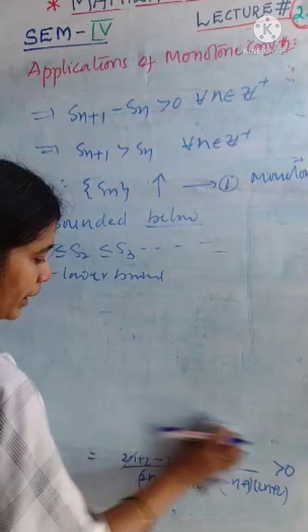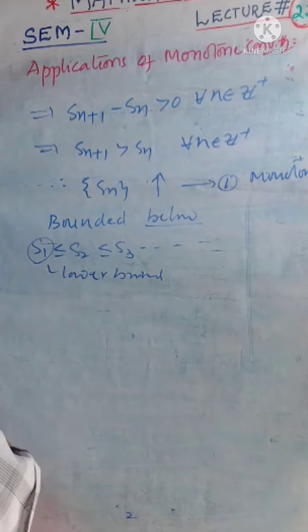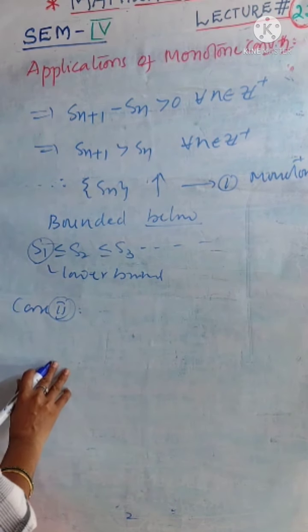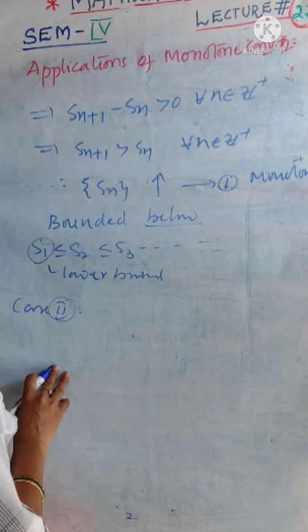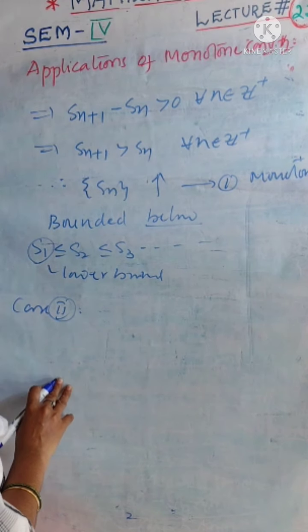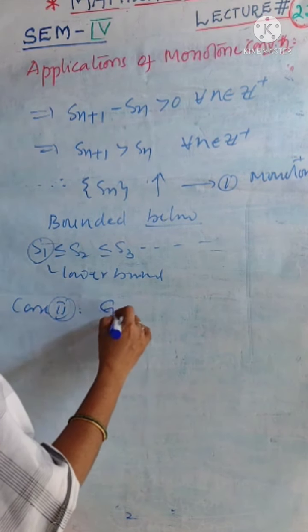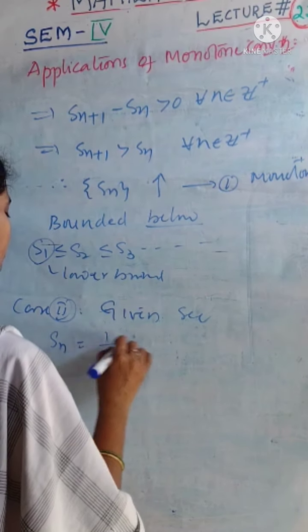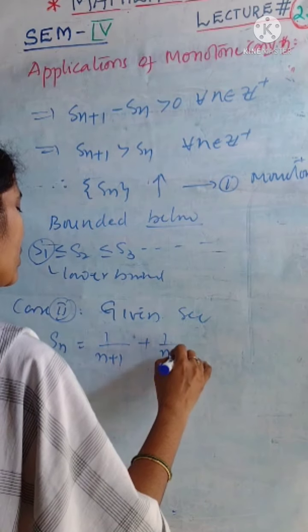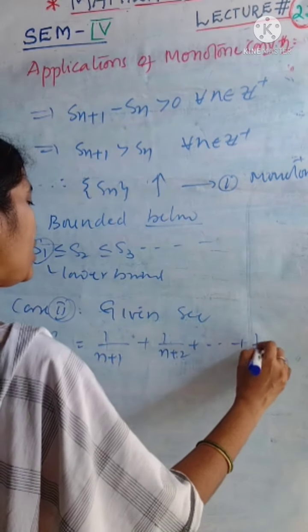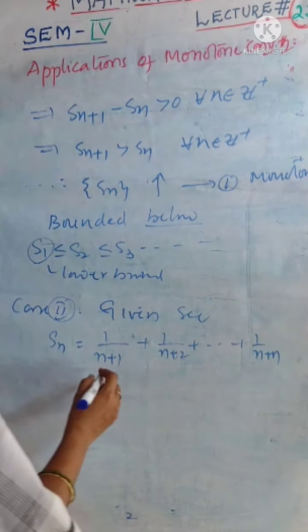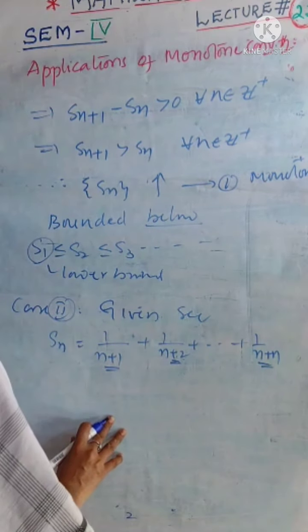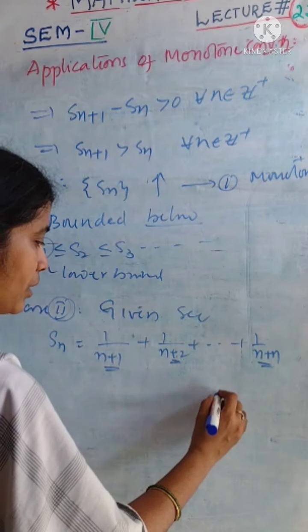So, coming to the second case, what is the second case we want to prove? Whether the sequence is bounded or not. The given sequence Sn is equal to 1 by n plus 1 plus 1 by n plus 2 plus and so on, 1 by n plus n. Let us see.